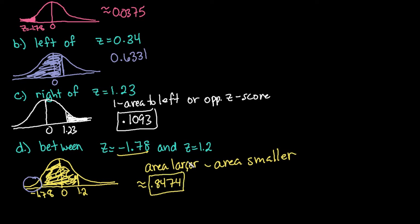So finding the area in Excel is pretty easy — all you have to do is plug in the values. Area to the left is what it finds automatically. If you want area to the right, you can do 1 minus the area to the left or use the opposite Z-score. For area between, you do the area of the larger Z-score minus the area of the smaller. As always, thanks for watching. If you have any questions or additional topics you'd like me to cover, please let me know.